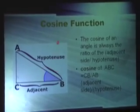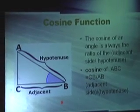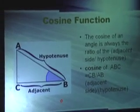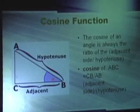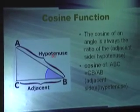The cosine function is the adjacent side over the hypotenuse side. You can see here the adjacent side of angle B and the hypotenuse, which is over here.